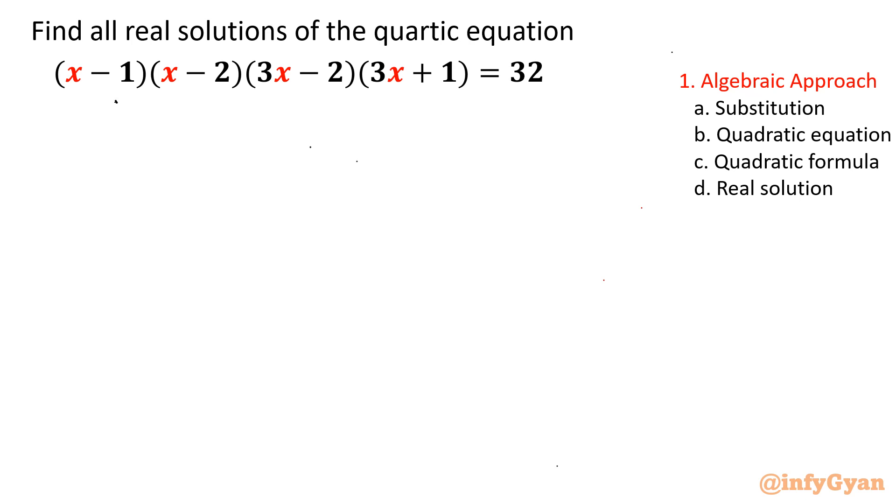Let me consider this bracket is a, this bracket is b, this bracket is c, this bracket is d. I am going to write ac times bd equal to 32. So let us write (x-1)(3x-2) times (x-2)(3x+1) equal to 32.